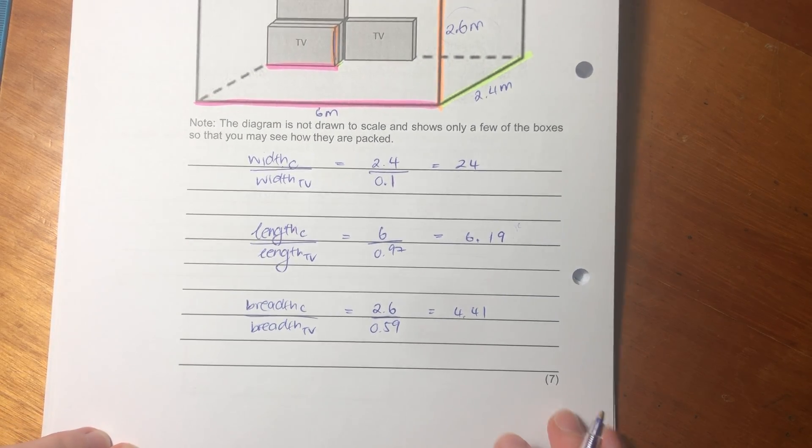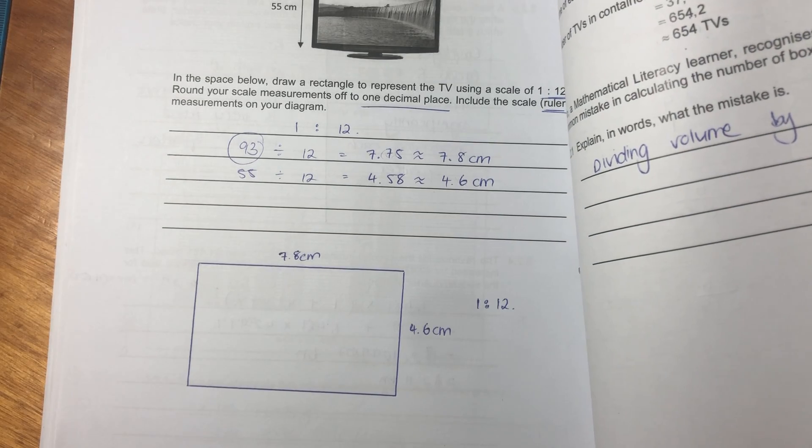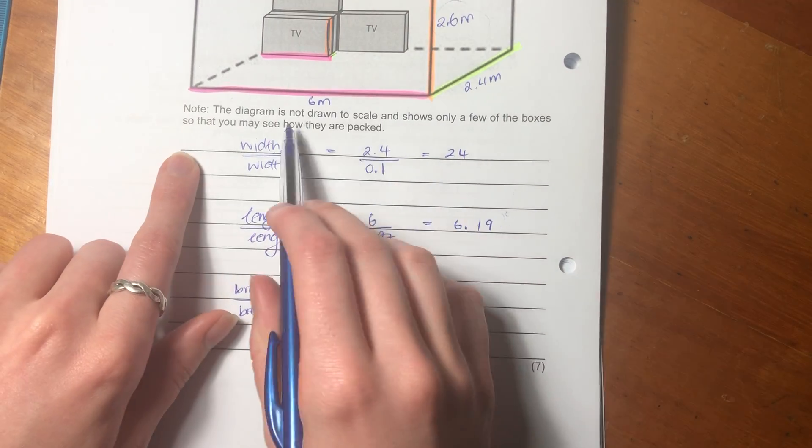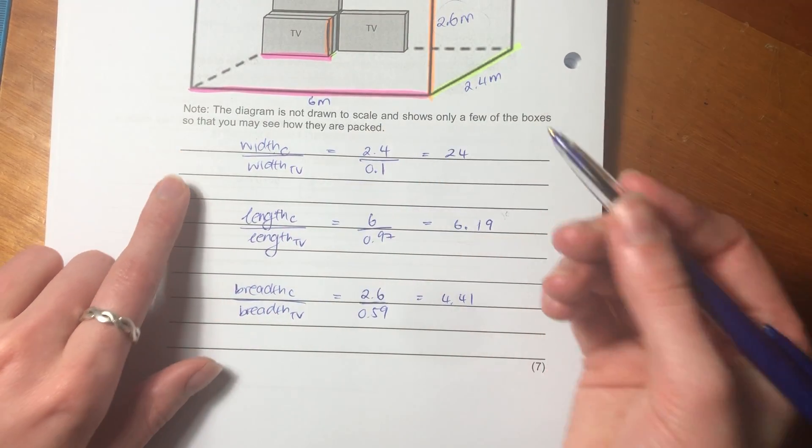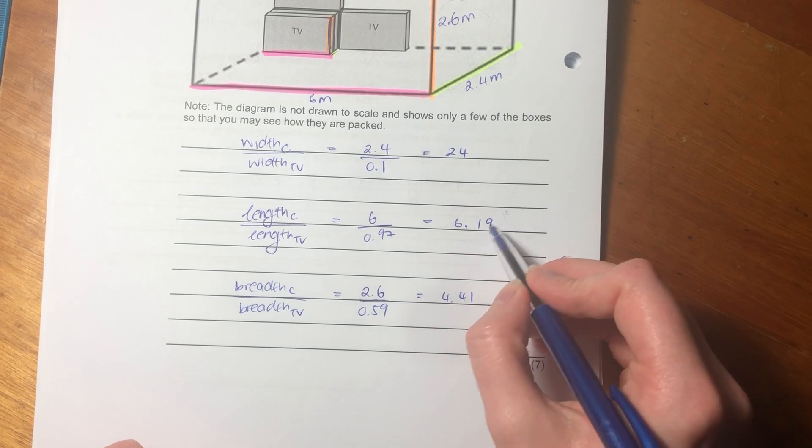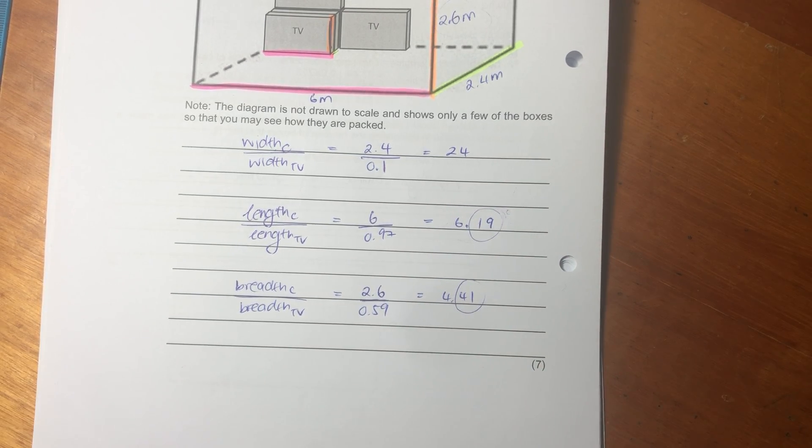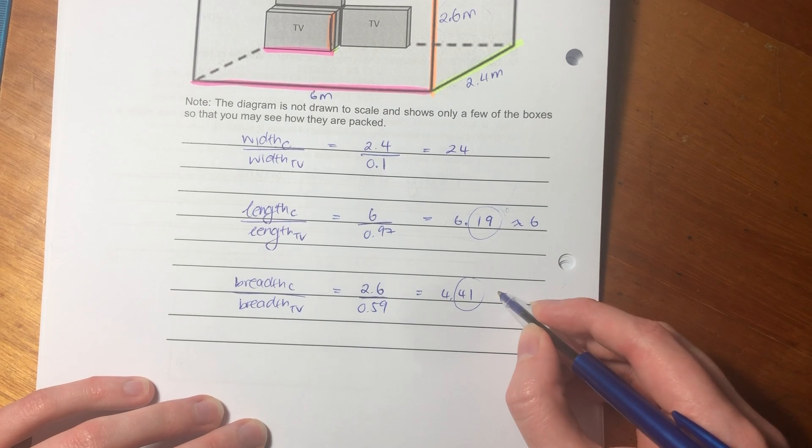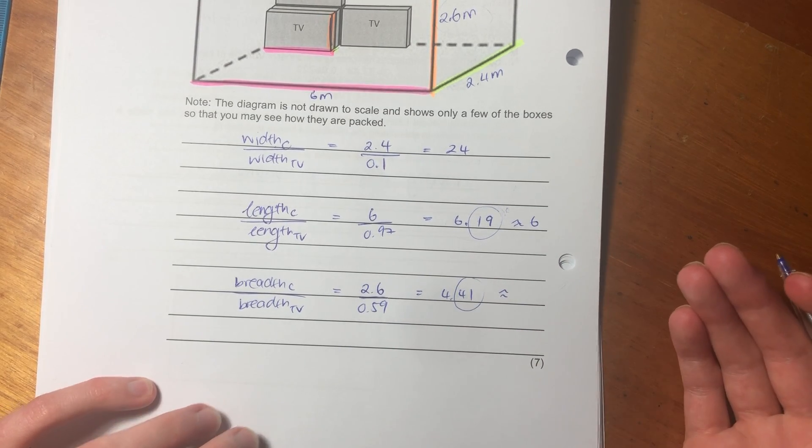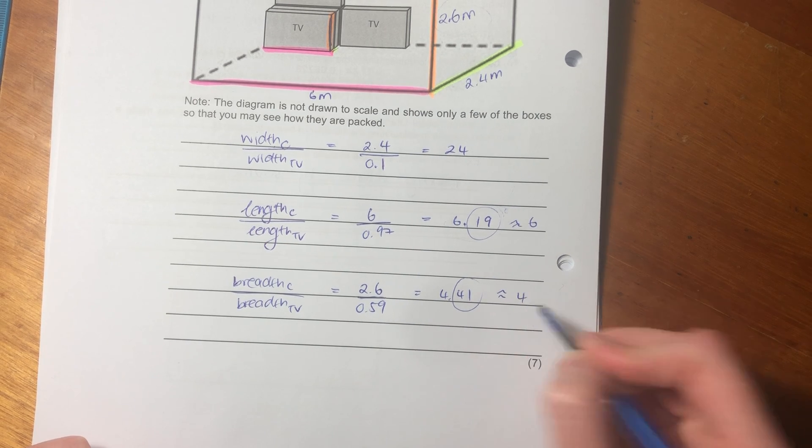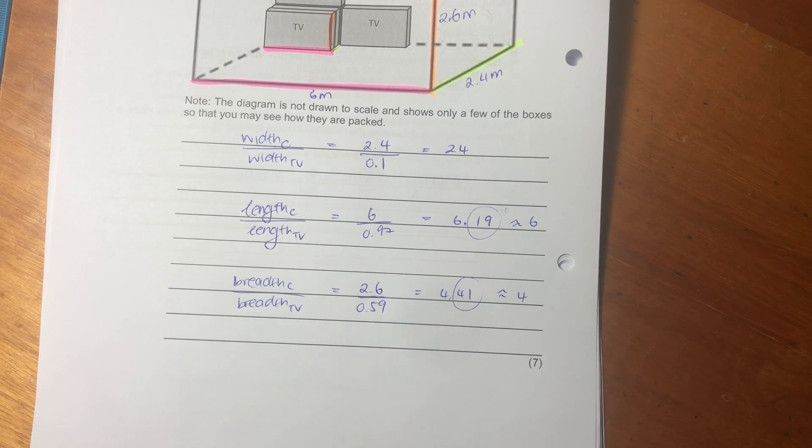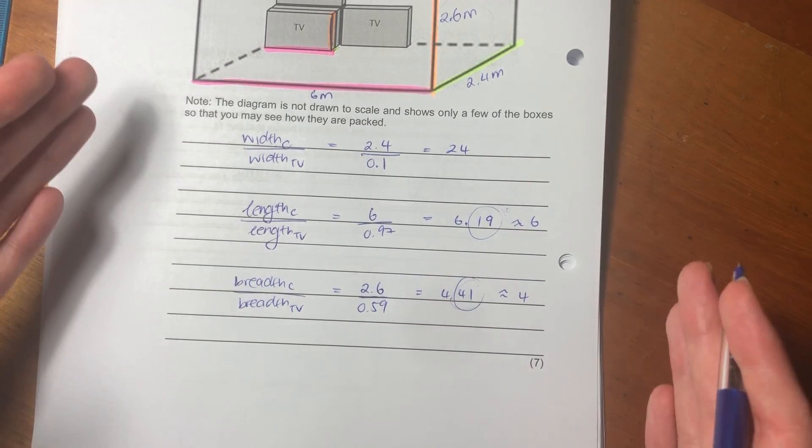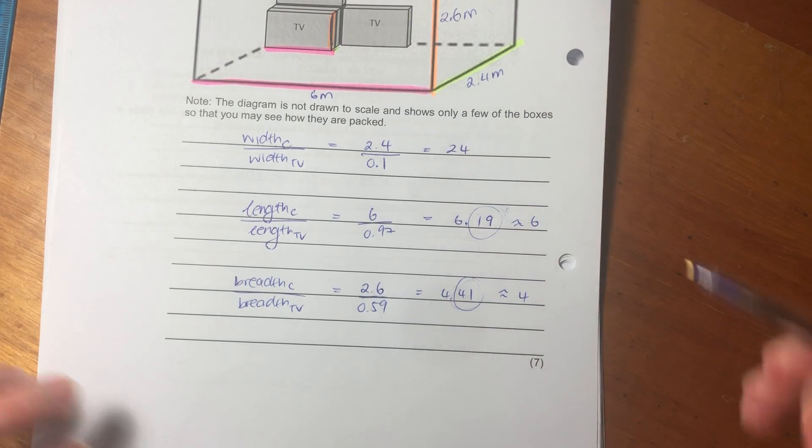And here is going to be 4.41 widths. Remember, we have to round it off. Because you can't have these little bits of boxes. You either have a whole box or you don't. So this one here, we're going to round this off to 6. And remember, you always have to round it down because you can't round it up, because you can't just make more space in a container. So you must round this off to a whole number, because we can only pack whole TVs. We can't cut them in half. So I'm doing all those whole numbers.